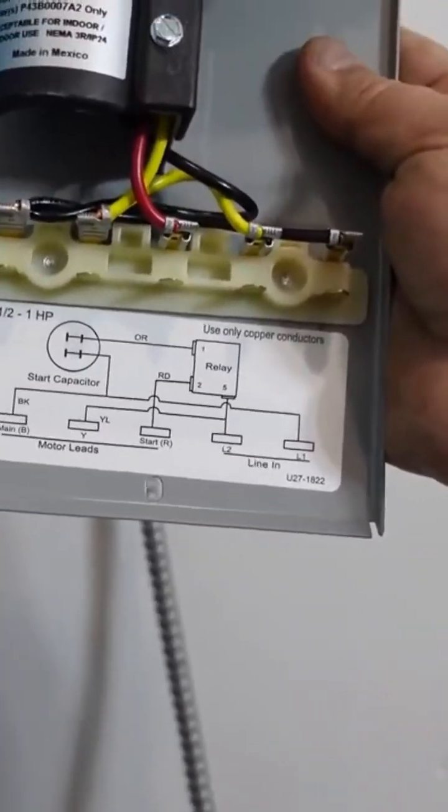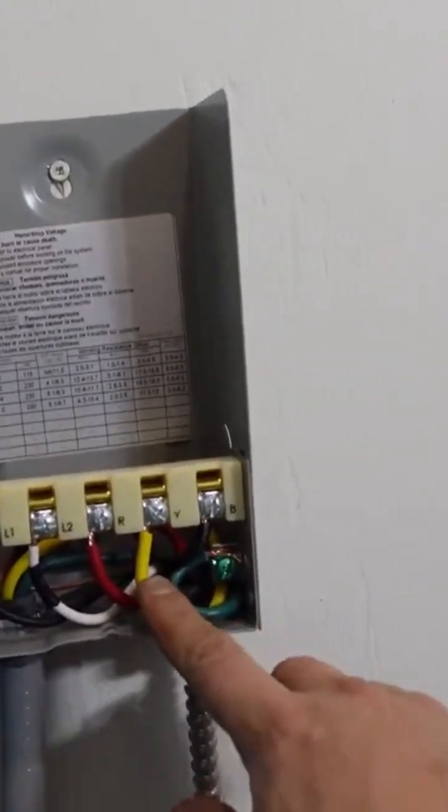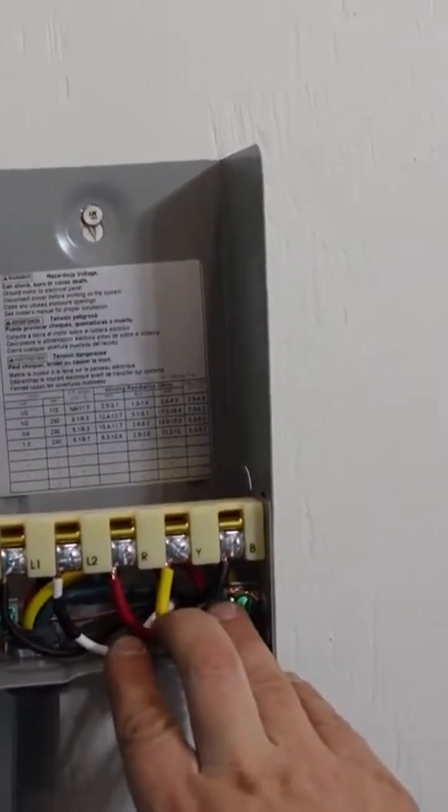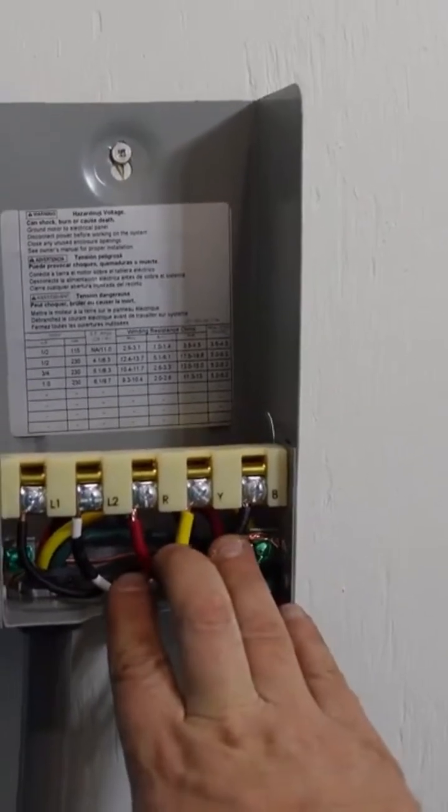And it shows you also a wiring diagram. So basically, what runs out to the pump is a red, a yellow, and a black. So those three wires are for a three-wire pump with capacitor that start that pump.